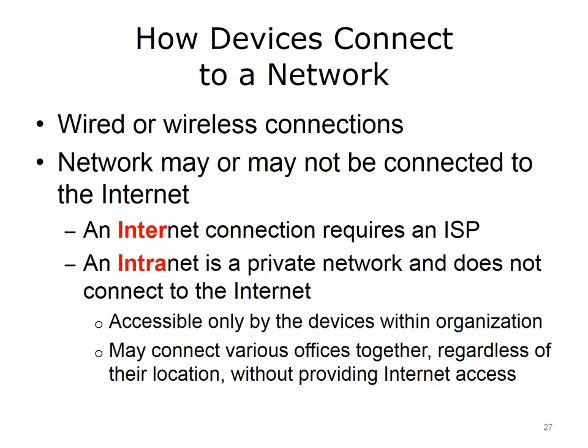Devices such as scanners, printers, computers, and mobile devices connect to a network using a wired and/or wireless connection. The network to which those devices are connected may or may not be connected to the Internet. An Internet connection requires the use of an ISP. An intranet, on the other hand, is a private network and does not connect a device to the Internet. The network at an organization or company is an example of an intranet — accessible only by devices within the organization. An intranet can connect various remotely located offices together without providing Internet access.